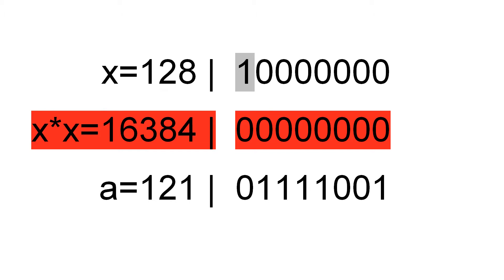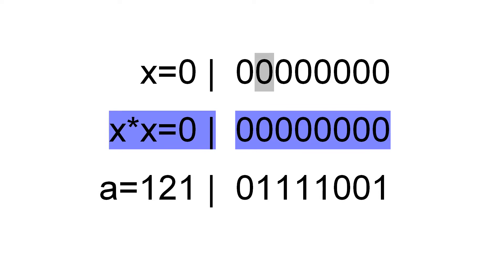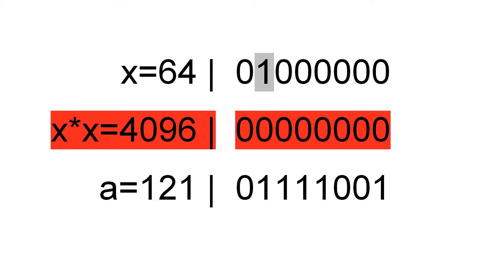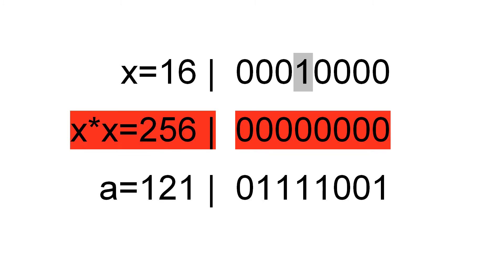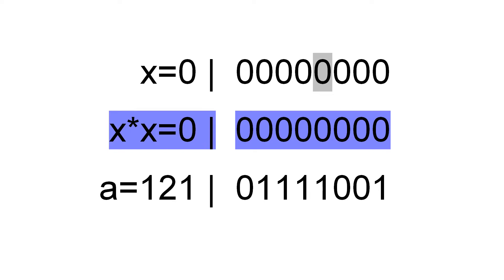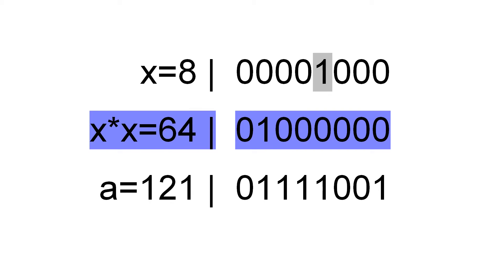We set the first bit — we get an overflow, so we reset. We set the next bit — we get an overflow, so we reset. And so on until this bit: we set it and we get 64. 64 is less than 121, so we keep this bit set.